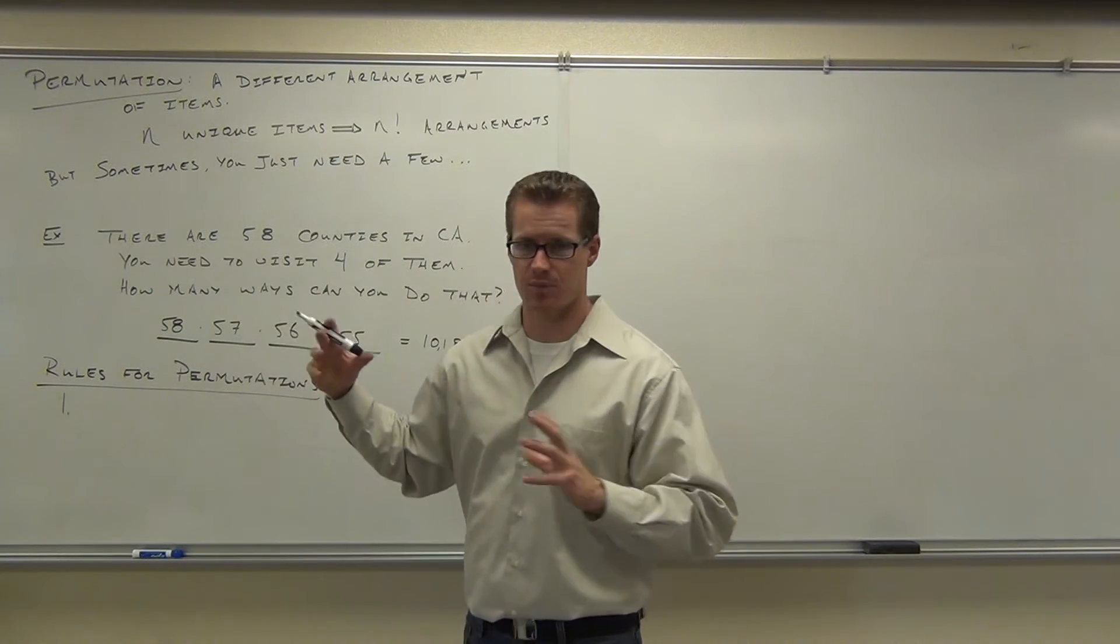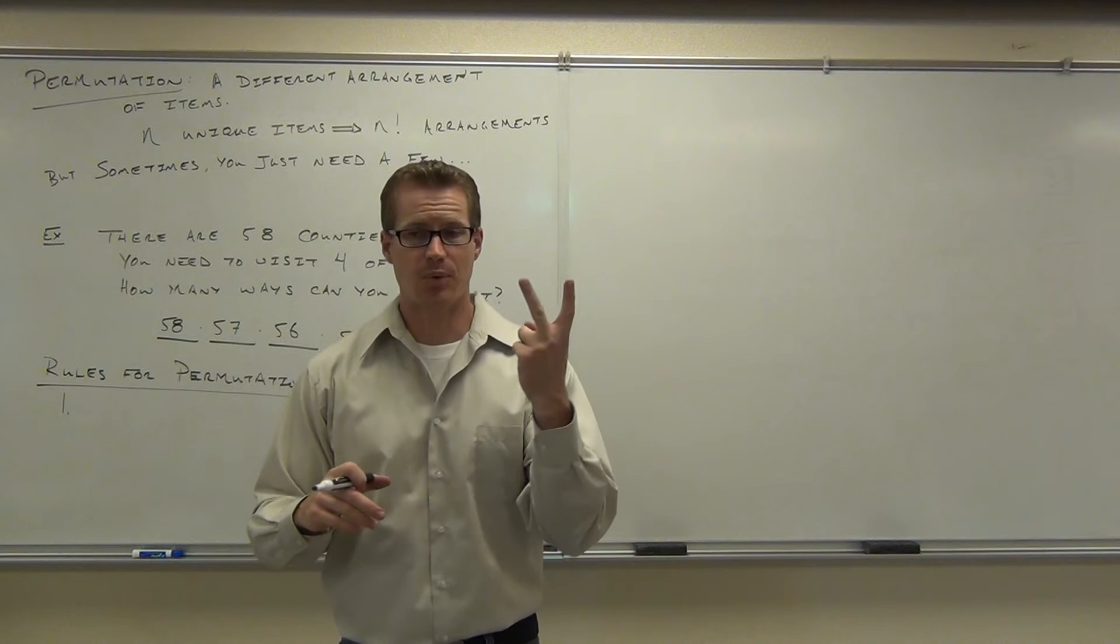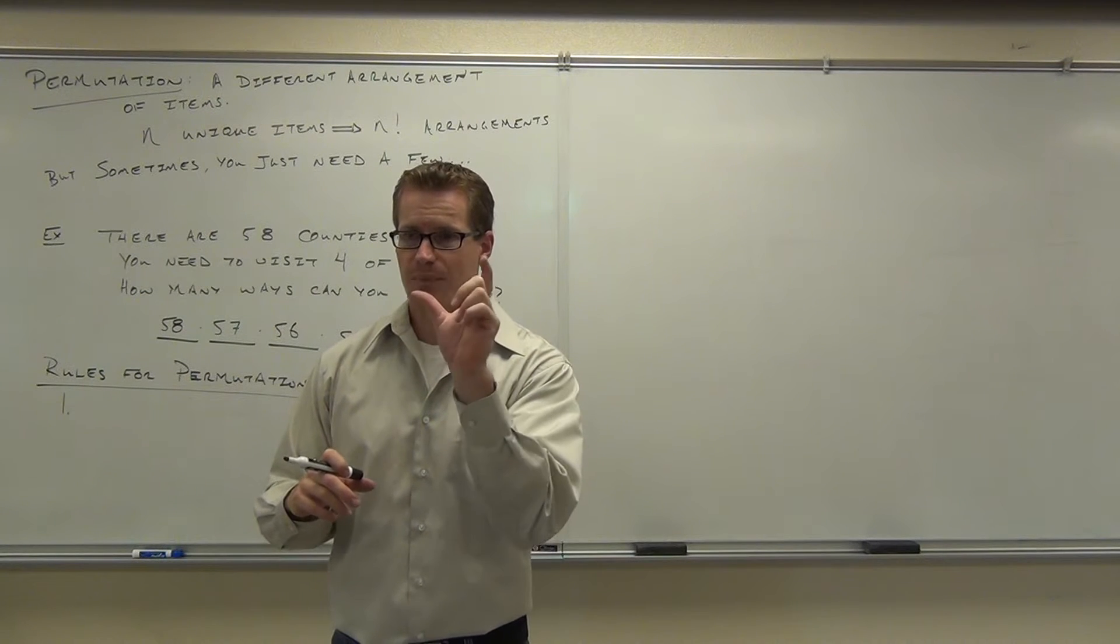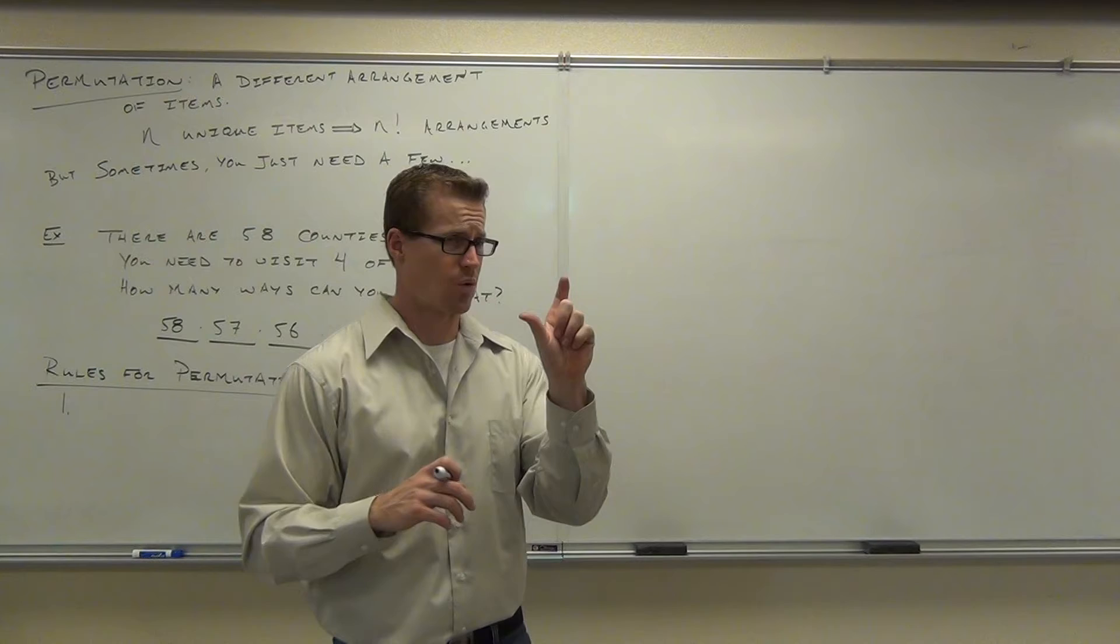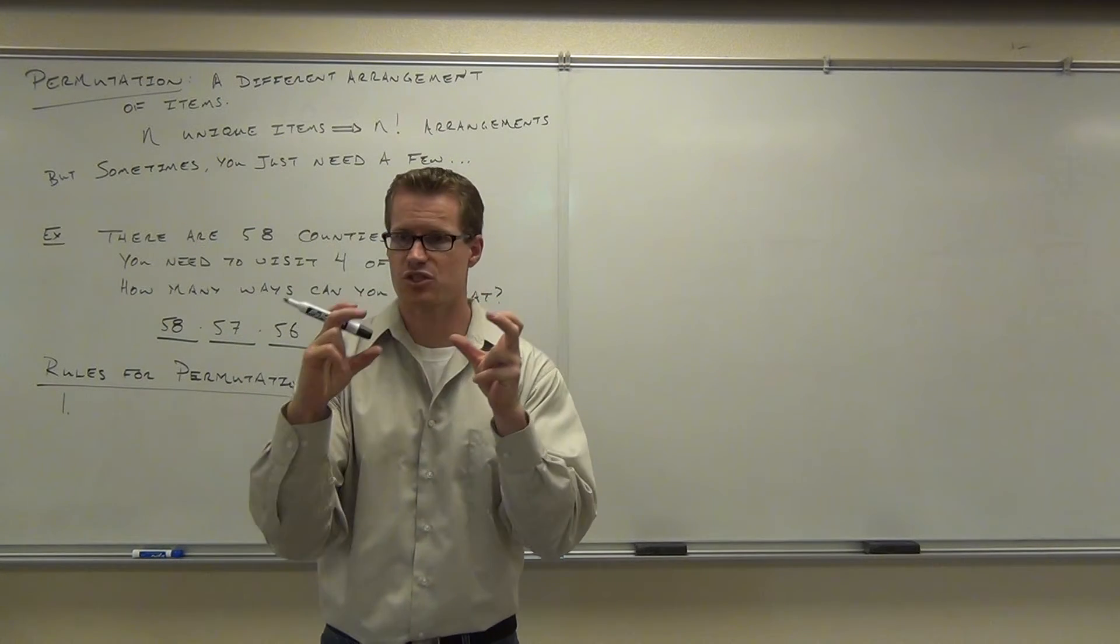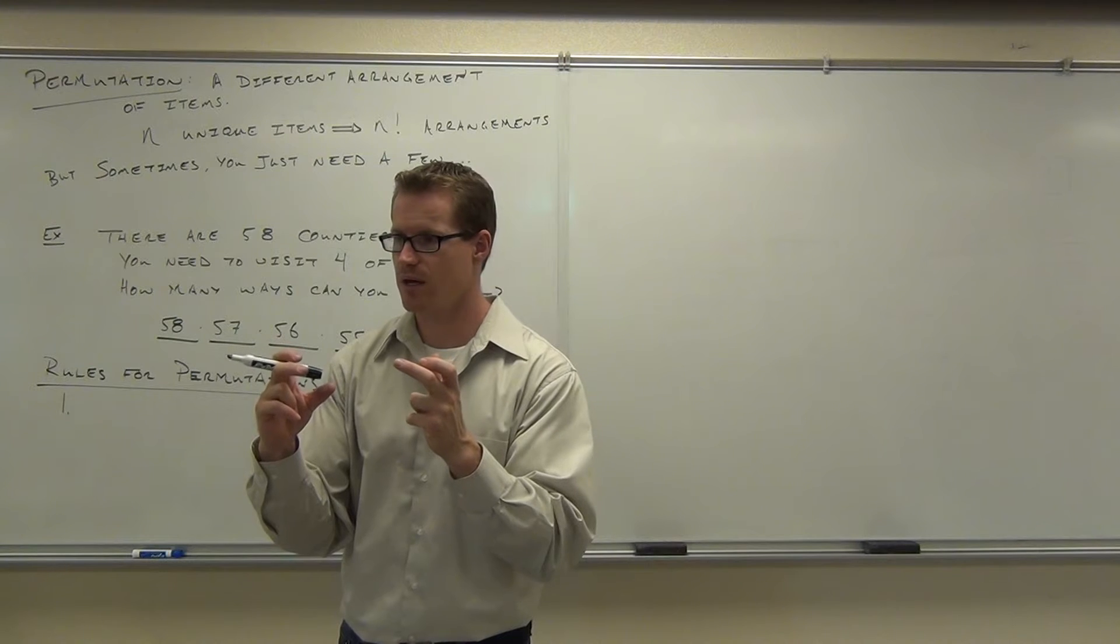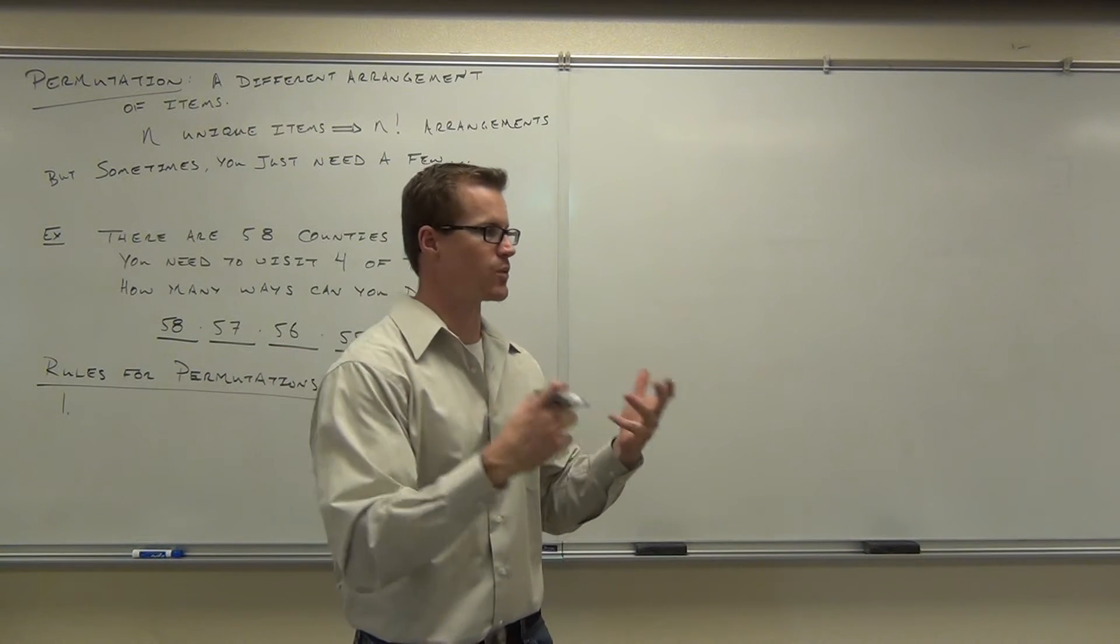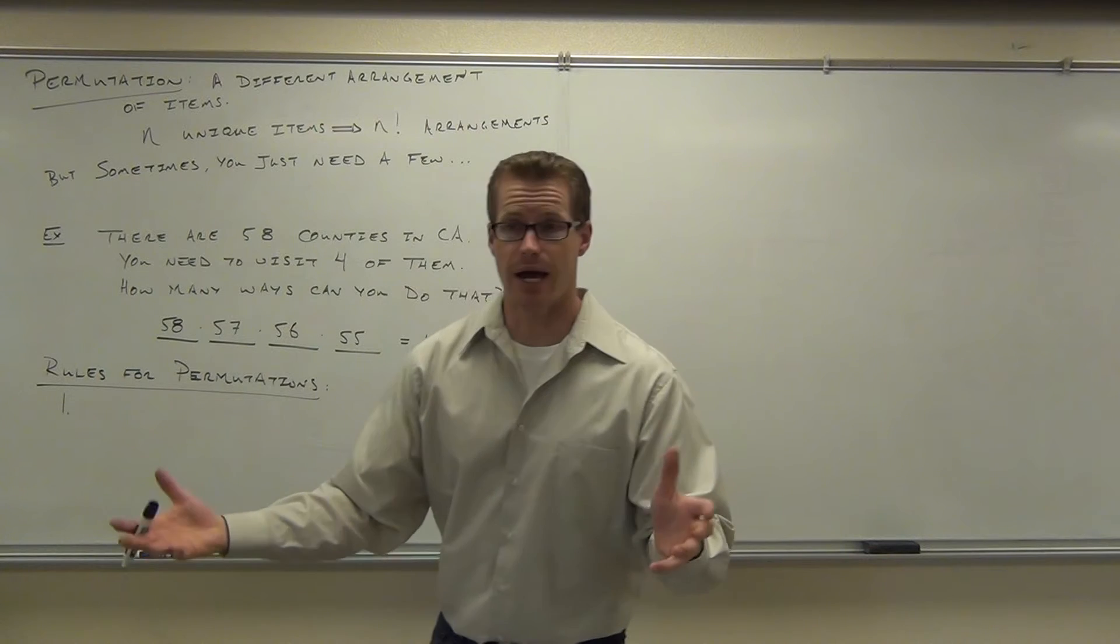What that means is with my fruit example at the beginning of class, if I had two apples, if I exchange those apples, well, that means the ordering is really not different, right? I'd have two apples either way. The picture would look identical. Do you follow me on that? So, in order for this to really work, to get a different arrangement, you have to have n different items.